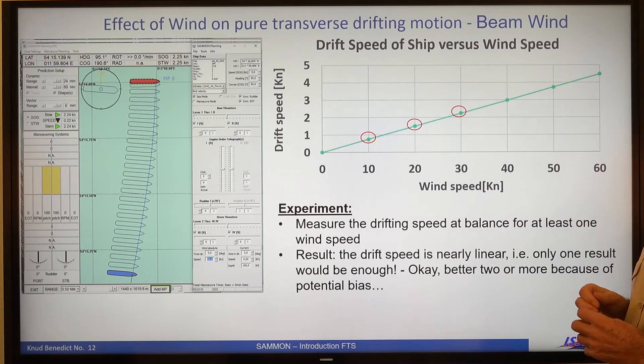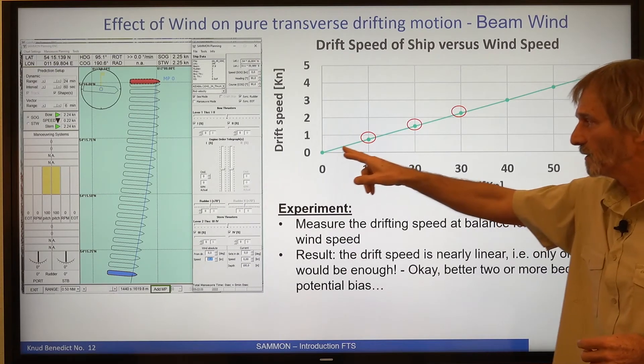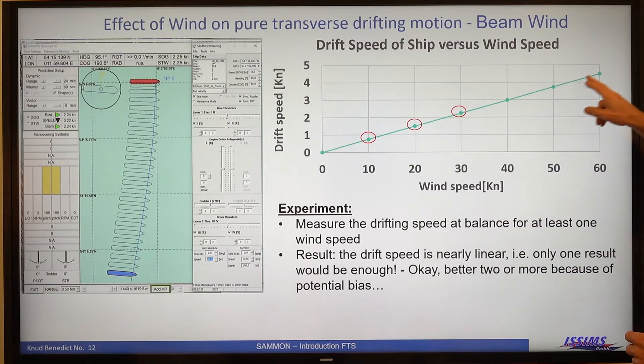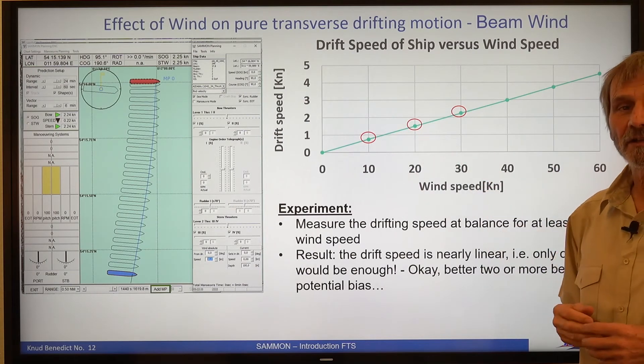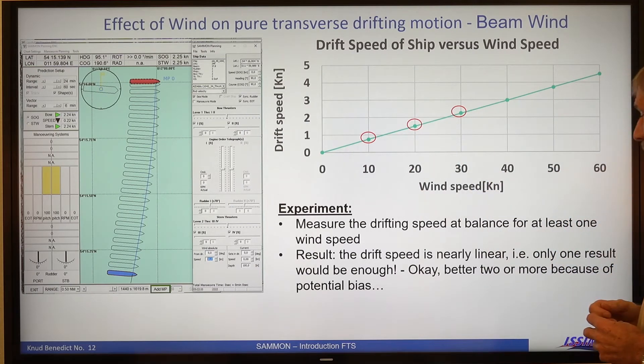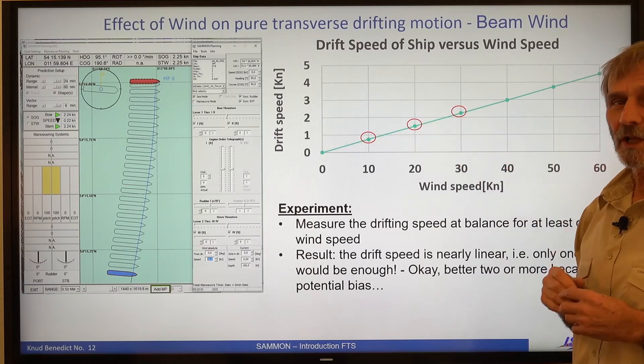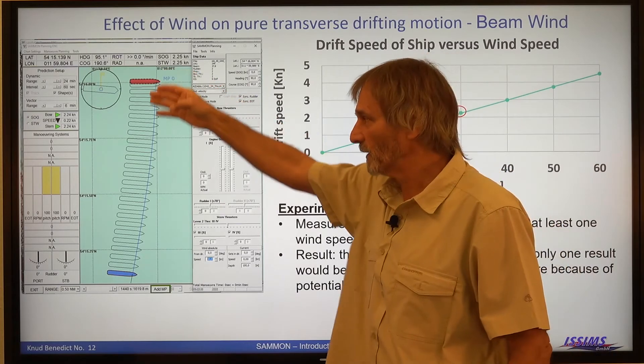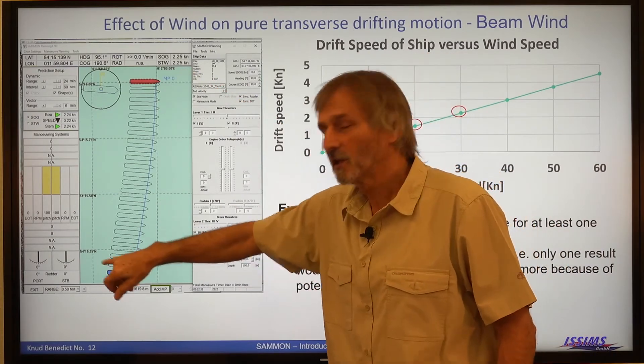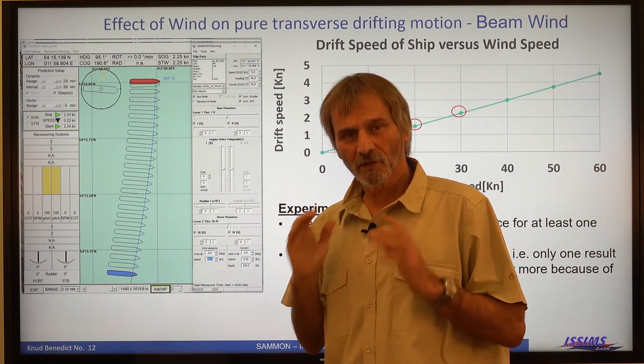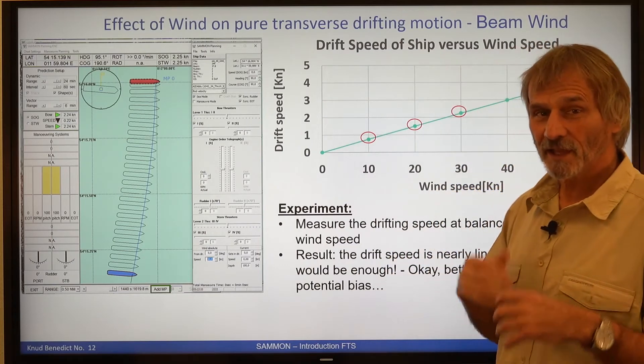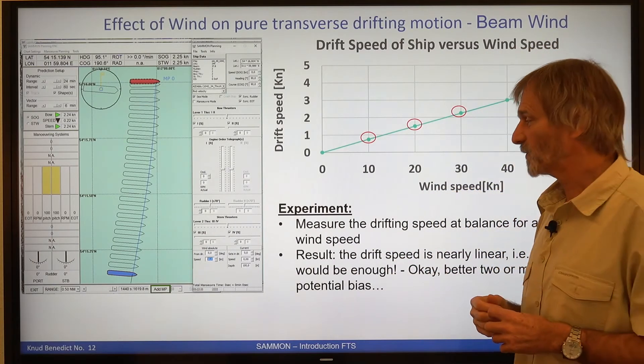What we see from this result is, the drift speed is nearly on one line. It's a linear relationship. So this would mean, if you know about that, only one drift speed would be enough. So let your ship drift and estimate the final drift speed. And this will be fine to calculate the average of your drift speed under wind.